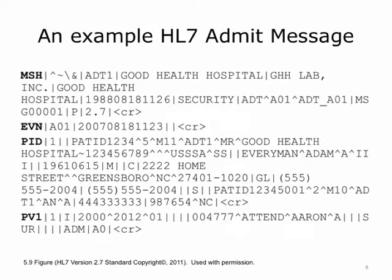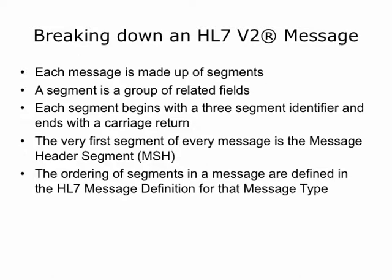This example message communicates information about the hospital admission of Adam Everyman. It consists of header information about the message, followed by information about the trigger event, followed by information about the patient, followed by information about the patient's visit at the hospital. MSH, EVN, PID, and PV1 are all known as segments. Each message is made up of segments — a segment is a group of related fields. Each segment begins with a three-character segment identifier and ends with a carriage return. The very first segment of every message is the message header segment, whose segment ID is MSH. The ordering of segments in a message matters and is defined in the HL7 message definition for that message type.